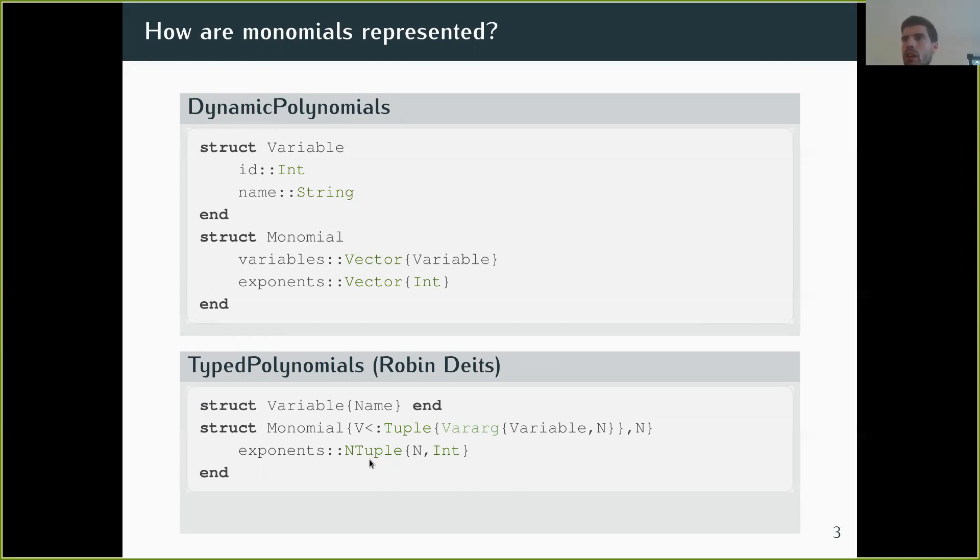So with this kind of dynamic use case, you still maybe want to use this one, that's why it's called DynamicPolynomials. And for the other use case, you could use this one. So now that we had two implementations, we thought of creating a MultivariatePolynomials API package.